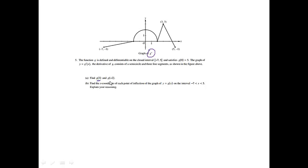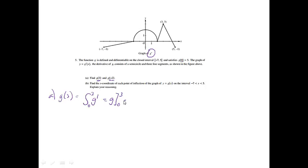The first thing it asks us to do is find g of 3 and then g of negative 2. So if we're going to find g of 3, this is the derivative. If I just want g, I know that I need to take the integral of g prime. I want to find it at 3, so I'm going to put a 3 up here, and they told me what's happening at 0, so I'm going to put the 0 on the bottom. The integral of g prime will just give me g, evaluated at 3 and 0, which equals g of 3 minus g of 0.